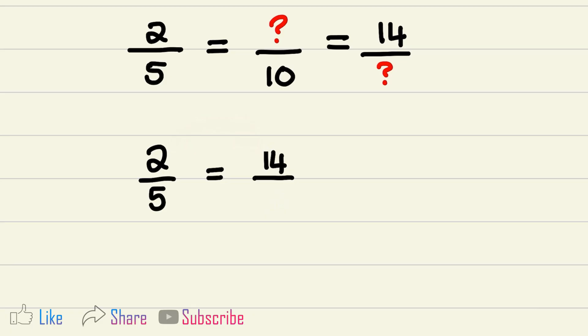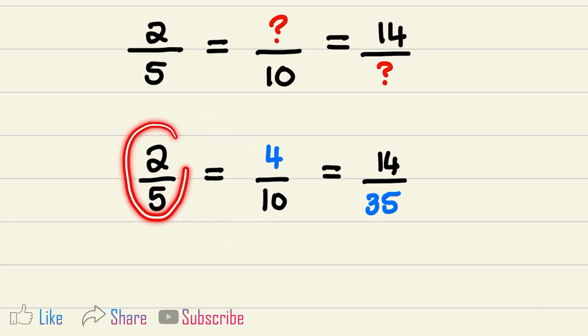Now let's see if we can find the equivalent fraction for changing 2 to 14. To go from 2 to 14, I need to multiply by 7. And if I apply that same multiplication in the denominator, I will get the equivalent fraction. So 5 times 7 is equal to 35. So 2 over 5 is equal to 4 over 10, and 2 over 5 is also equal to 14 over 35.